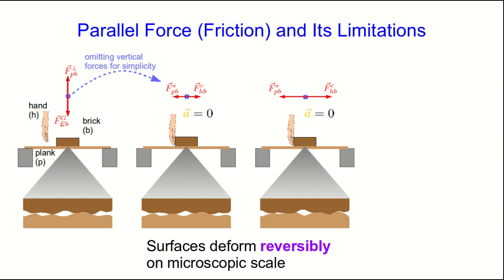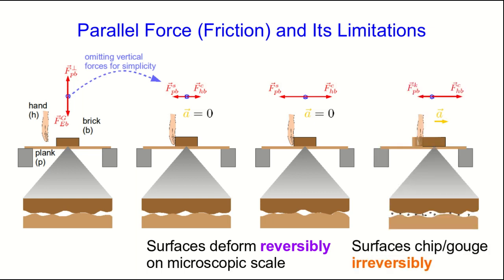But now exactly the same thing happens as before. If you press very hard, then the surfaces actually break. They start chipping and gouging each other and causing irreversible state changes. And this is what the kinetic friction is. The two surfaces are now sort of skipping over each other, occasionally bouncing off of each other, and doing damage to each other as they do so.